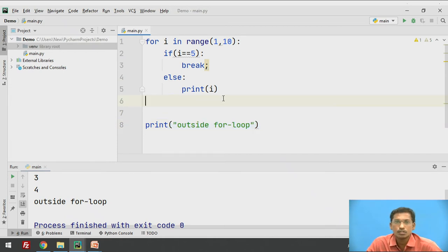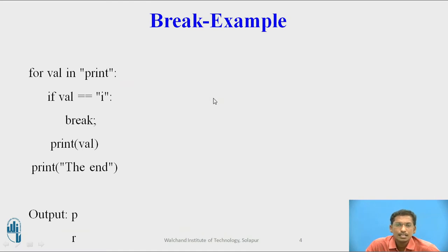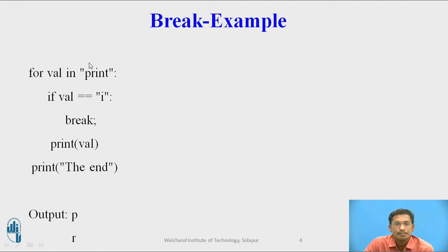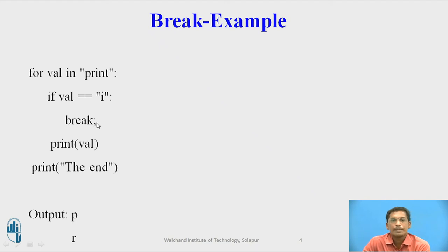Similarly, the break statement can be used inside a while loop also. Here is an example: for val in 'print' (a string), if val == 'i' then break, otherwise print val, and print 'The end'. Initially val is 'p', it prints p; then val is 'r', it prints r; then val is 'i', the condition is true so break is executed. Control comes out of the for loop and 'The end' is printed. So output is p, r, and The end.